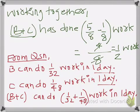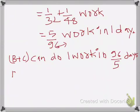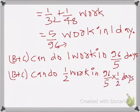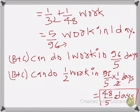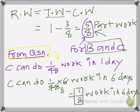We need to determine how many days it takes for B and C to do 1/2 work. B plus C can do one work in 96/5 days, so for 1/2 work it takes 96/5 times 1/2 days, which gives 48/5 days. So to complete the remaining 1/2 work, it takes 48/5 days.